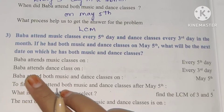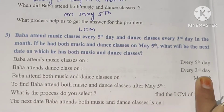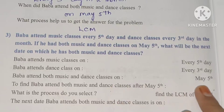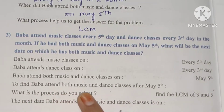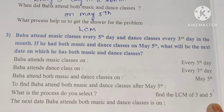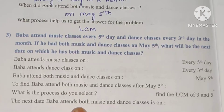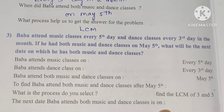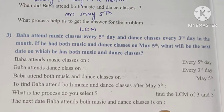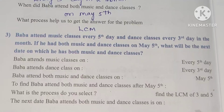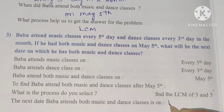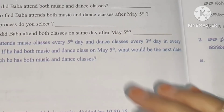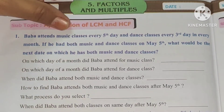Baba attends dance class on every third day. Baba attended both music and dance classes on May 5th. To find when Baba attends both music and dance class after May 5th, what process do you select? Find LCM of 3 and 5. LCM of 3 and 5 is 15, so the next date is the 15th day after May 5th.